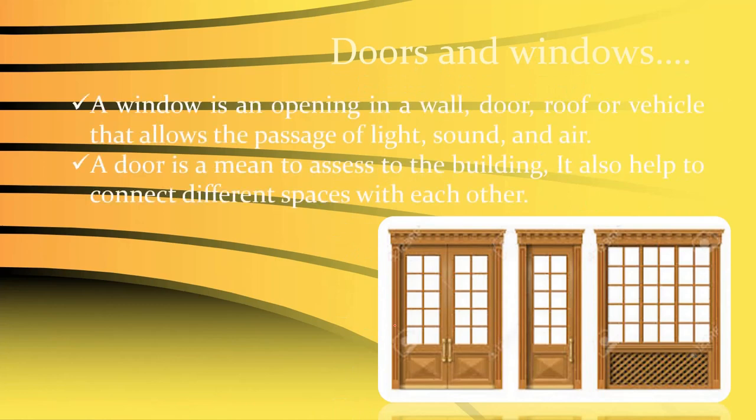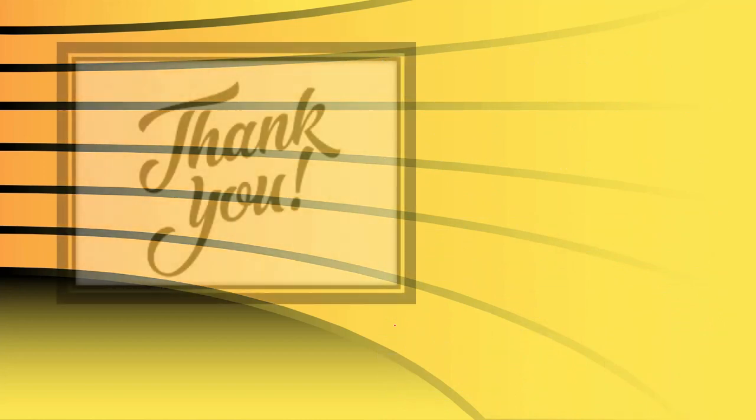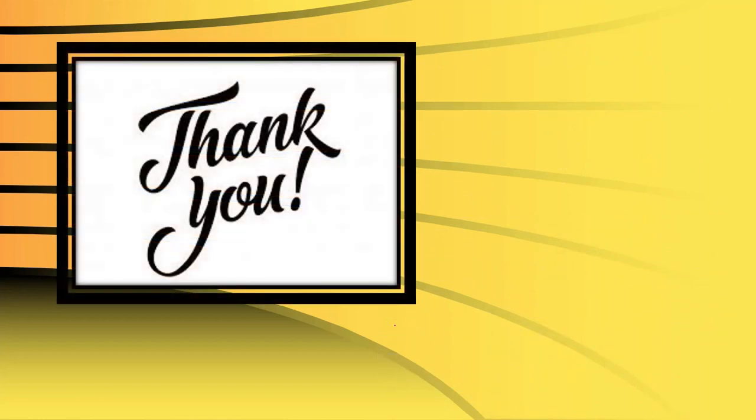A window is an opening in the wall that allows the passage of light, sound, and air. A door is the means of access to the building and helps connect different spaces with each other. These are the components covered in today's lecture — thank you very much.